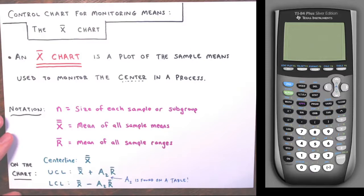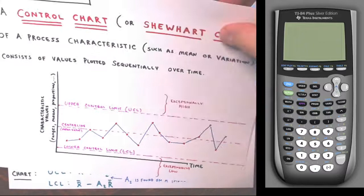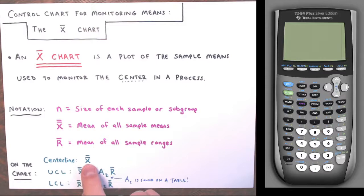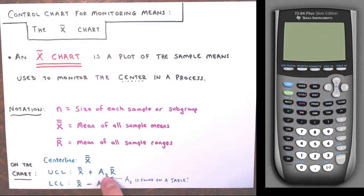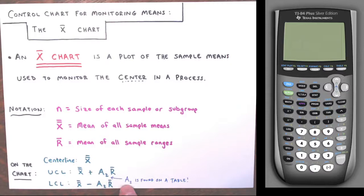On the graph itself, the center line is at X-bar-bar. From there, we add and subtract the same value to get the UCL and LCL: that value is A₂ times R-bar. So UCL = X-bar-bar + A₂ × R-bar, and LCL = X-bar-bar − A₂ × R-bar. The A₂ constant is found from a control chart constants table, which should be provided — or you can search for a 'table for control limits of X-bar chart' online.